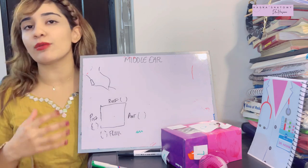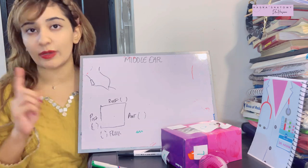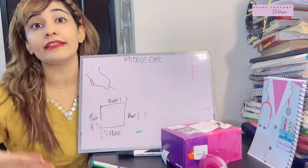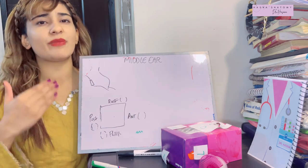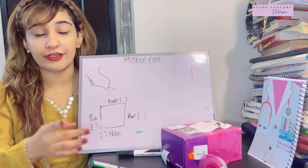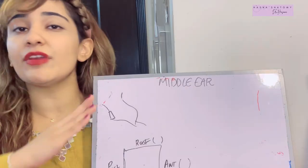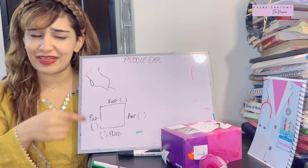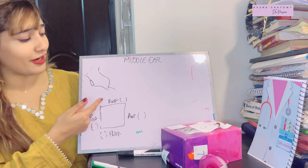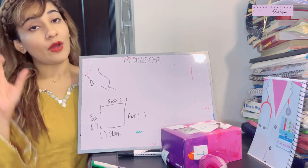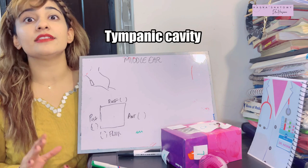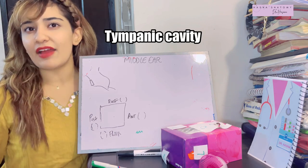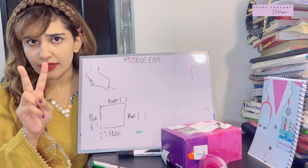We've already discussed up to the tympanic membrane, and if you haven't watched those videos, I highly recommend you check them out. The tympanic membrane is the boundary between the external and middle ear. We've broken through that membrane — past the pars flaccida and the chorda tympani — and entered the middle ear.